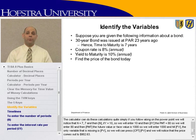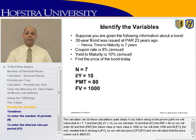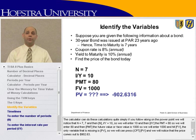Following along on the PowerPoint, N equals 7, so enter 7 and then N. I/Y is 10 — the yield to maturity is 10% — so enter 10 and then I/Y. The payment is 80, so enter 80 and then PMT. The future value, or face value, is 1,000, so enter 1,000 and then FV. The only variable missing — the only calculator button we haven't used — is present value. So we compute present value, and the price comes out to $902.63.